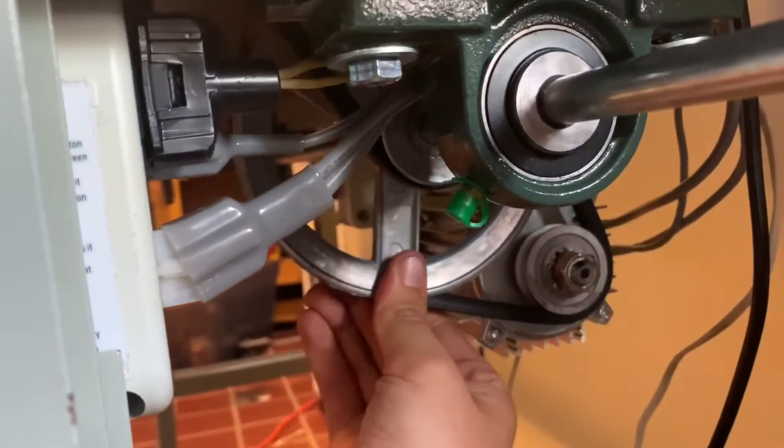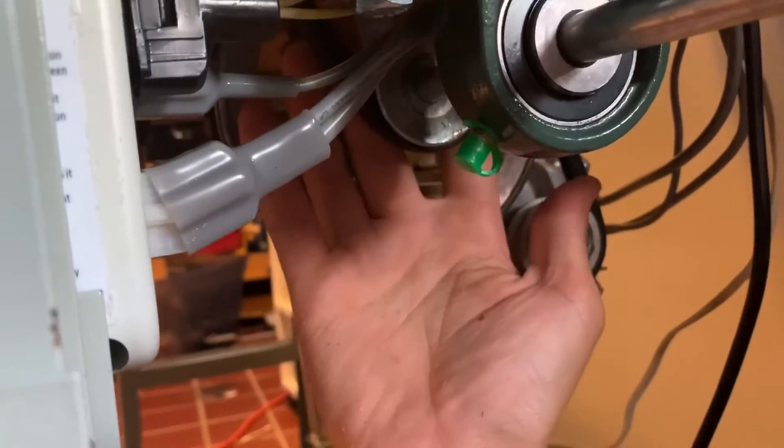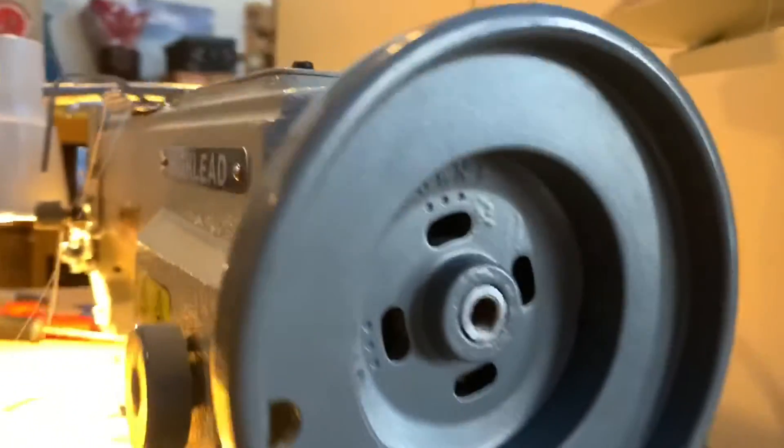It goes up to this big wheel, big pulley, slows it down. And there's a smaller pulley right here that goes up to my machine wheel.